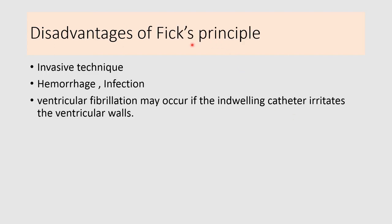In the Fick method, a cardiac catheter must be introduced up to the pulmonary artery to measure venous oxygen level, making it an invasive technique with risks of hemorrhage and infection. If the ventricular walls are stimulated by error, it may result in ventricular fibrillation and rhythm abnormalities. These are the disadvantages of using the Fick principle for measurement of cardiac output.